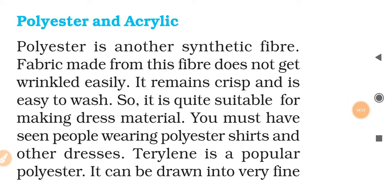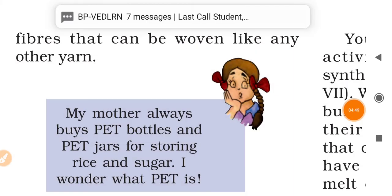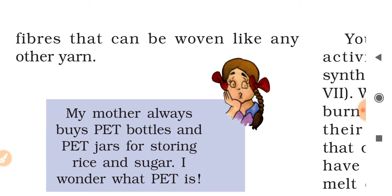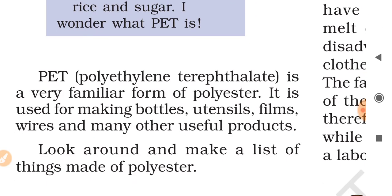Polyester is another synthetic fiber. Fabric made from this fiber does not get wrinkled easily. It remains crisp and is easy to wash, so it is quite suitable for making dress material. Terylene is a popular polyester. It can be drawn into very fine fibers that can be woven like any other yarn. PET — polyethylene terephthalate — is a very familiar form of polyester. It is used for making bottles, utensils, films, wires and many other useful products. If you have a plastic bottle, you can see at the base that PET is written on it.